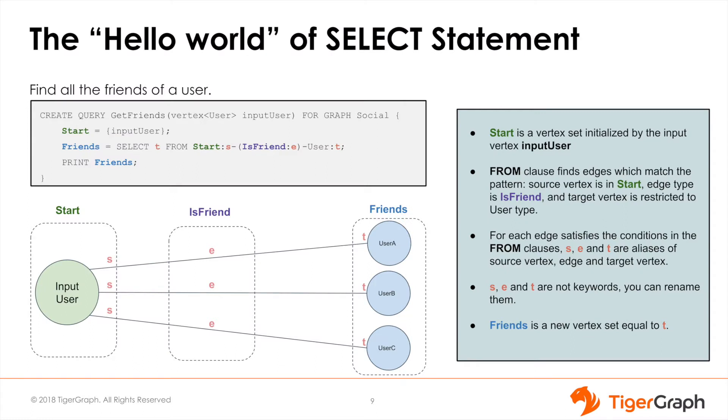The SELECT statement is a fundamental building block of each query which allows us to traverse the graph. In our specific case we will be performing a one-hop traversal to find all of a specific user's friends.